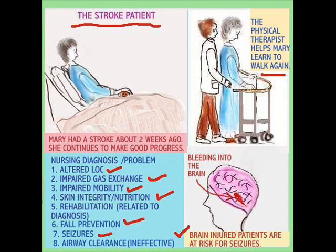Mary had a stroke about two weeks ago and she continues to make good progress. These are some of the nursing diagnoses you would come up with: altered level of consciousness, impaired gas exchange, impaired mobility, skin integrity and nutrition, rehabilitation, fall prevention, seizures, and airway clearance.